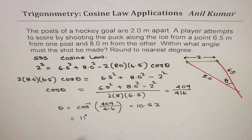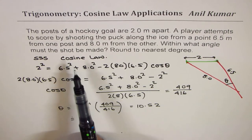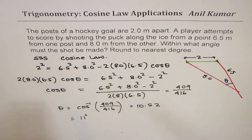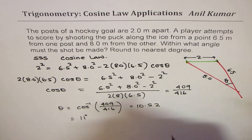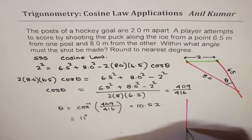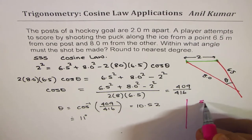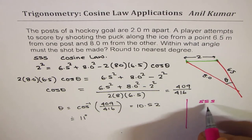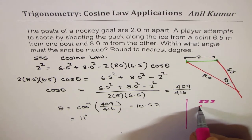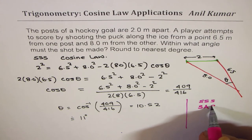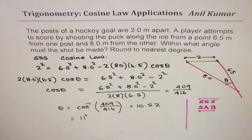I hope the steps are absolutely clear. Remember, cosine law is applied in two conditions: one is when you know all three sides (SSS), and the other is when you know side-angle-side (SAS). Under these two conditions, we should be applying cosine law.